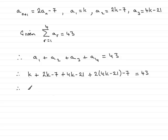So all we need to do now is just expand out that last bracket, so we'll just copy this down. And if we expand this out we're going to get 8k and then 2 lots of minus 21, well that's minus 42, and we've got the minus 7 equals 43.